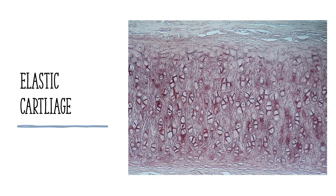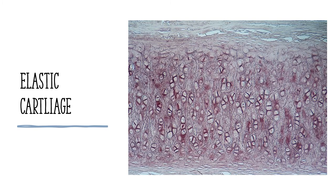The last type of cartilage is called fibrocartilage. It gets its name because it is densely stacked like fibers and has a lot of collagen fibers in it. Fibrocartilage is the strongest cartilage we have in our body. It is found in joints that don't really move — where we need to seal bones tightly together. The best place we find this is in our intervertebral discs, the pieces of cartilage between each bone in our backbone.